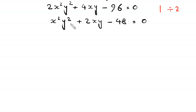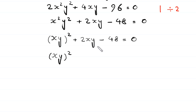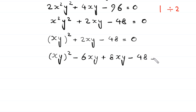Now, x squared y squared can be written as xy whole squared, so we have xy whole squared plus 2xy minus 48 equals 0. This is a quadratic equation in terms of xy and it is factorable. We solve it by factorization. We split 2xy as negative 6xy plus 8xy, giving xy whole squared minus 6xy plus 8xy minus 48 equals 0.